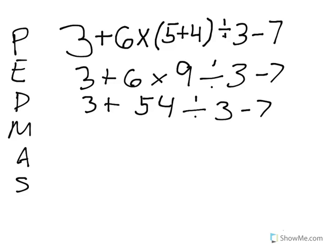Still going. We're going to divide next. So 54 divided by 3 is 18. 3 goes into 5 one time with a remainder of 2. Bring down the 4. 3 goes into 24 eight times, so we get 18. So now we have 3 plus 18 minus 7.